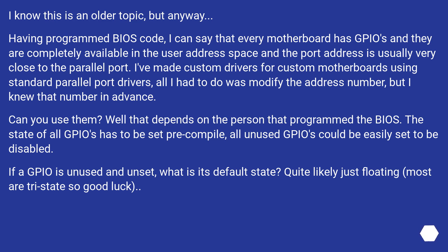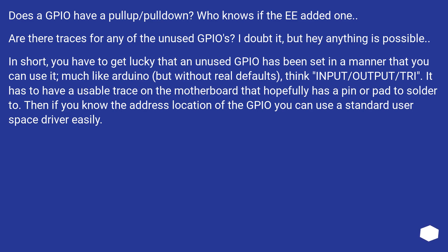Can you use them? That depends on the person that programmed the BIOS. The state of all GPIOs has to be set pre-compile, and all unused GPIOs could easily be set to disabled. If a GPIO is unused and unset, its default state is quite likely just floating — most are tri-state, so good luck. Does a GPIO have a pull-up or pull-down? Who knows if the engineer added one. Are there traces for any of the unused GPIOs? In short, you have to get lucky that an unused GPIO has been set in a manner that you can use it — much like Arduino but without real defaults. It has to have a usable trace on the motherboard with a pin or pad to solder to. Then, if you know the address location of the GPIO, you can use a standard user-space driver easily.